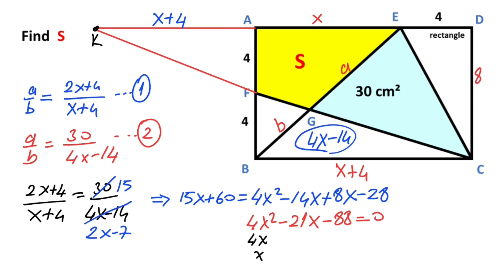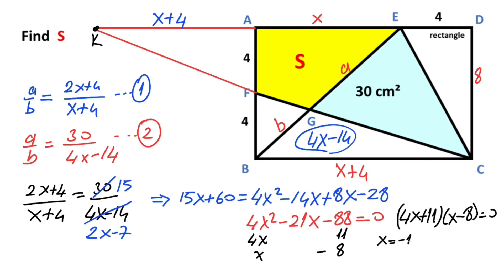So 4x squared equals 4x times x, and minus 88 equals 11 times negative 8. That means (4x plus 11)(x minus 8) equals 0, giving x equals minus 11 over 4 — which we cancel out — so x equals 8 units.